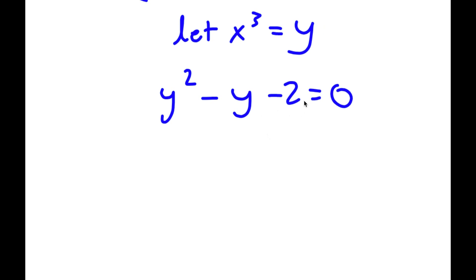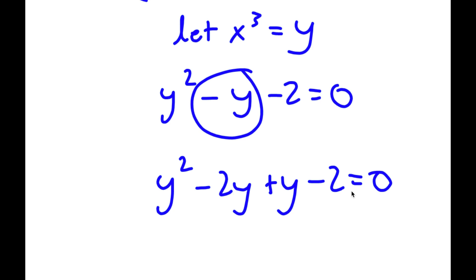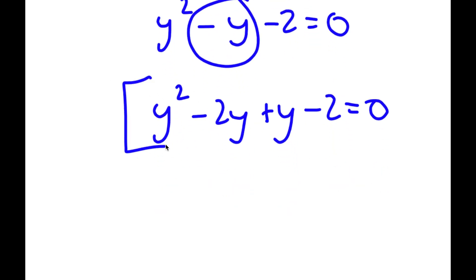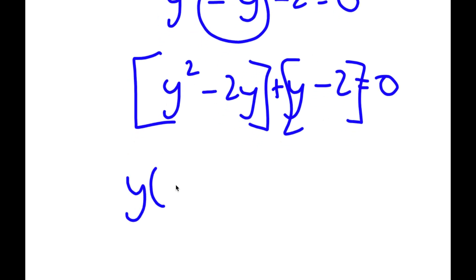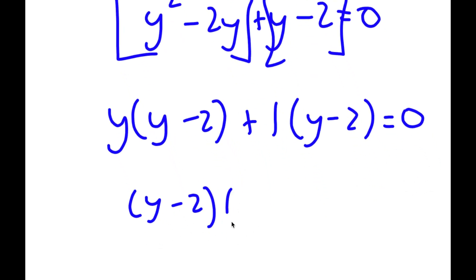Now we have a simple quadratic equation here. To solve this, I'm going to write negative y as negative 2y plus y, then factor by grouping. If I factor out y from y squared minus 2y, and factor out 1 from y minus 2, I have y times y minus 2 plus 1 times y minus 2 is equal to 0. So now if I factor out y minus 2, I get y minus 2 times y plus 1 is equal to 0.